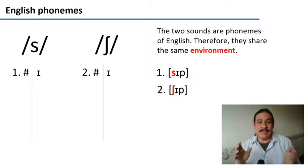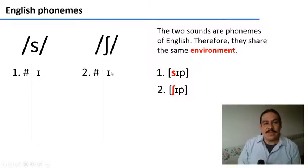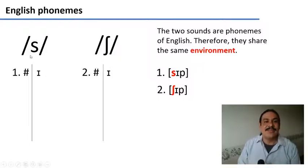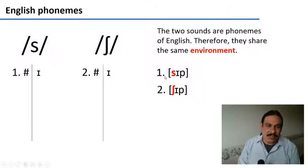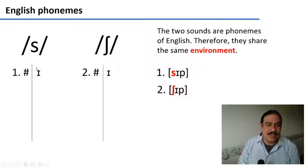One important thing about phonemes is that you know they are different because they occur in the same environment. We call an environment the sounds that surround a phoneme or a sound. For example, if we have /s/ in SIP, this /s/ has the edge of a word before it — we represent that with a pound sign — and it has the sound /ɪ/ after it. So /s/ occurs in an environment where it is preceded by the edge of a word and followed by /ɪ/.